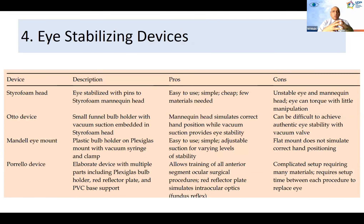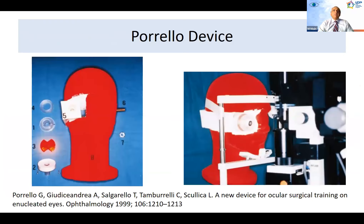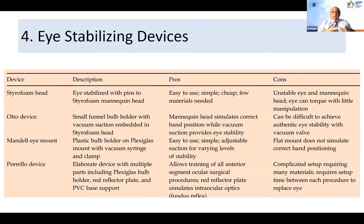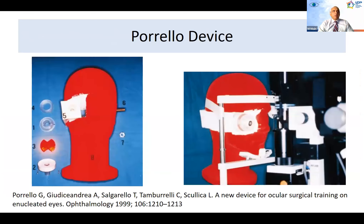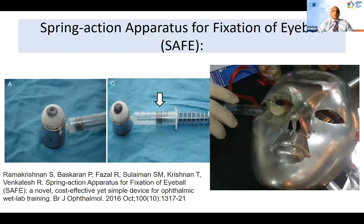The Porello device is a more elaborate device with multiple parts including a plexiglass bulb holder, red reflector plate, and PVC base — an advanced form of the styrofoam head that also allows checking intraocular pressure. It's a complicated setup, but it allows training of all anterior segment and ocular surgical procedures. The red reflector plate simulates intraocular optics, giving you the red reflex which is important when learning surgery.